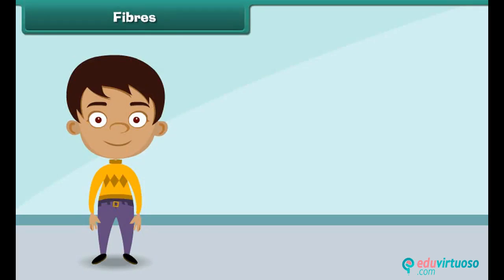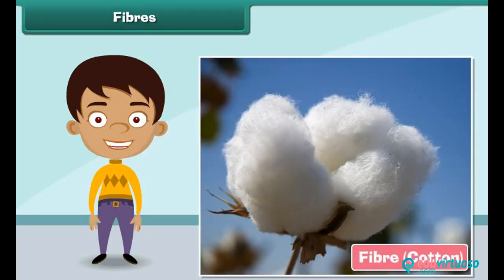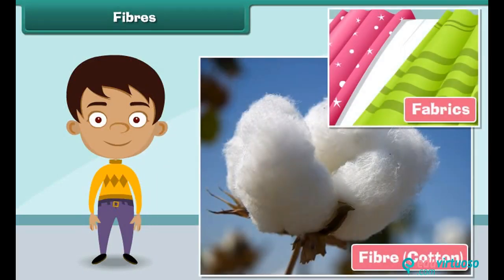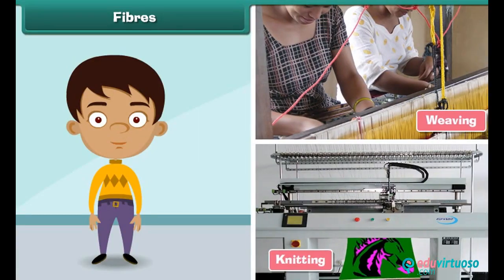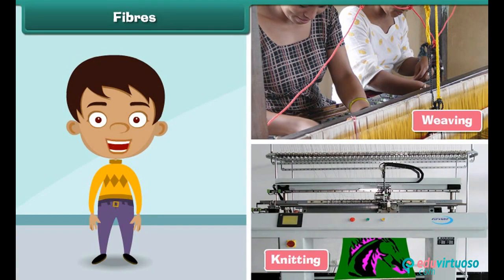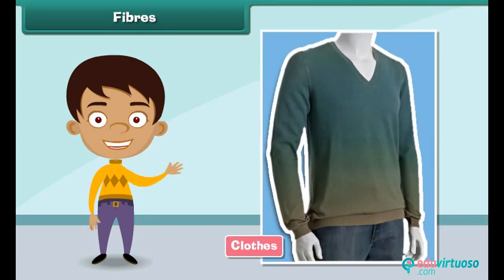Fiber is the raw material used in manufacturing clothes. Fibers are transformed into clothes through a series of steps. First, raw fibers are twisted together to form long strands of threads known as yarns. The yarns are then woven and knitted to form fabrics. Finally, fabrics are used to make clothes of different sizes and shapes to suit the needs of the people.